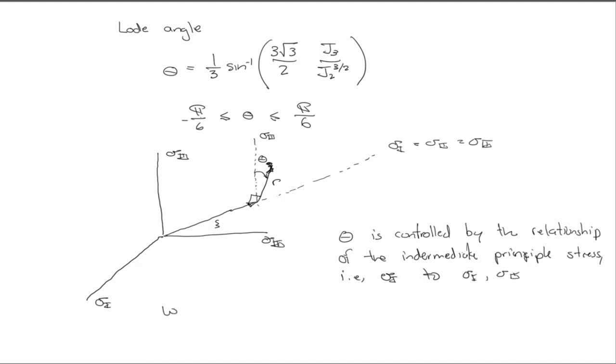So when sigma 2 is exactly equal to sigma 3, theta is 60 degrees, and when sigma 2 is exactly equal to sigma 1, theta is equal to 0 degrees.